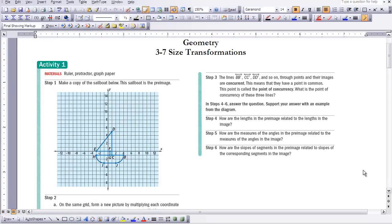This is Geometry, Lesson 3-7, Size Transformations. We're going to start out by doing Activity 1, and I've provided the activity for you, so you don't need to transfer this onto your graph paper. But what I want you to do is we're going to take all of the individual points, and we're going to multiply each coordinate by 3.